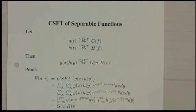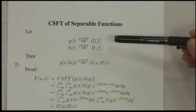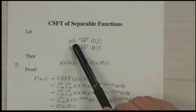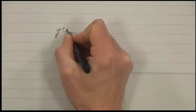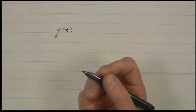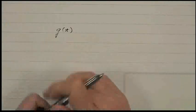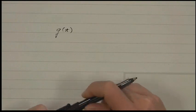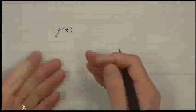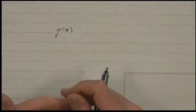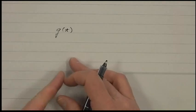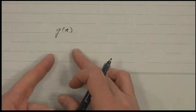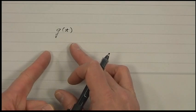You have to be a little careful here. If I give you a function, say g of t, and say I want the Fourier transform, that could actually be ambiguous. Typically if I said take the Fourier transform, the assumption would be the continuous time Fourier transform. But I could want to take the continuous space Fourier transform, thinking of this function as a 2D function — a mapping from R2 to R.